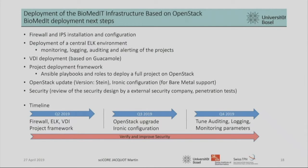We had to prepare a secure environment. We decided we have to configure the firewall and also intrusion prevention systems to secure our infrastructure. We also had to monitor, log, and audit everything on our projects, so we had to deploy a central ELK environment. Many users will connect to the infrastructure through VDIs, so we had to deploy a VDI infrastructure based on Guacamole. We also had to prepare the framework to deploy projects — users come with requirements and we have to set up the whole OpenStack environment. For that we use Ansible with playbooks to deploy a project on top of OpenStack.